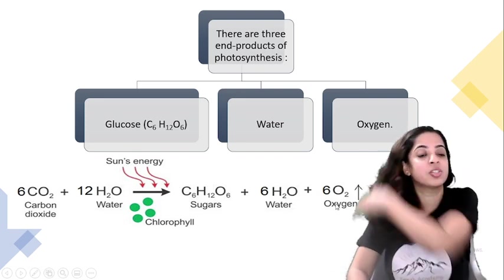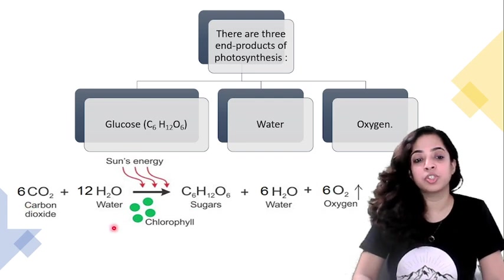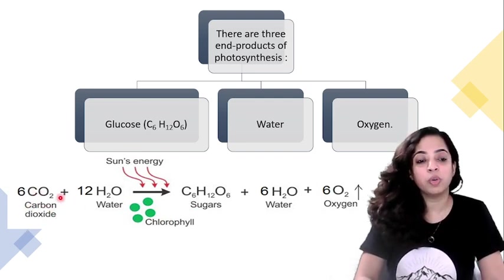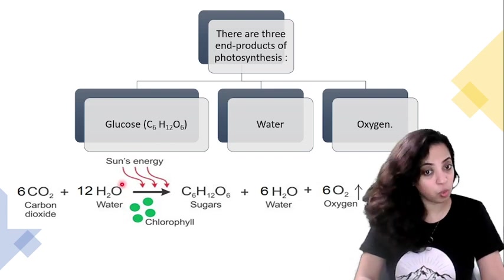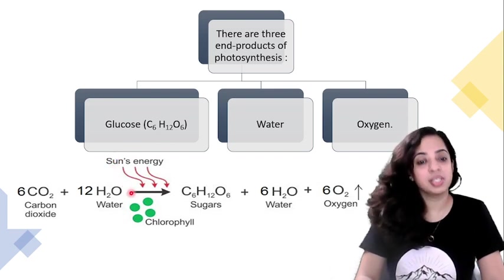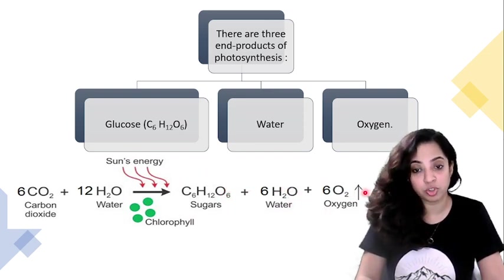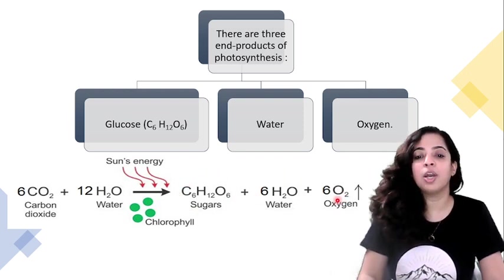As explained in the first module, six molecules of CO2 combine with 12 molecules of water in the presence of sunlight and chlorophyll to form one molecule of glucose, six molecules of water, and six molecules of oxygen. So the three products are glucose, water, and oxygen.